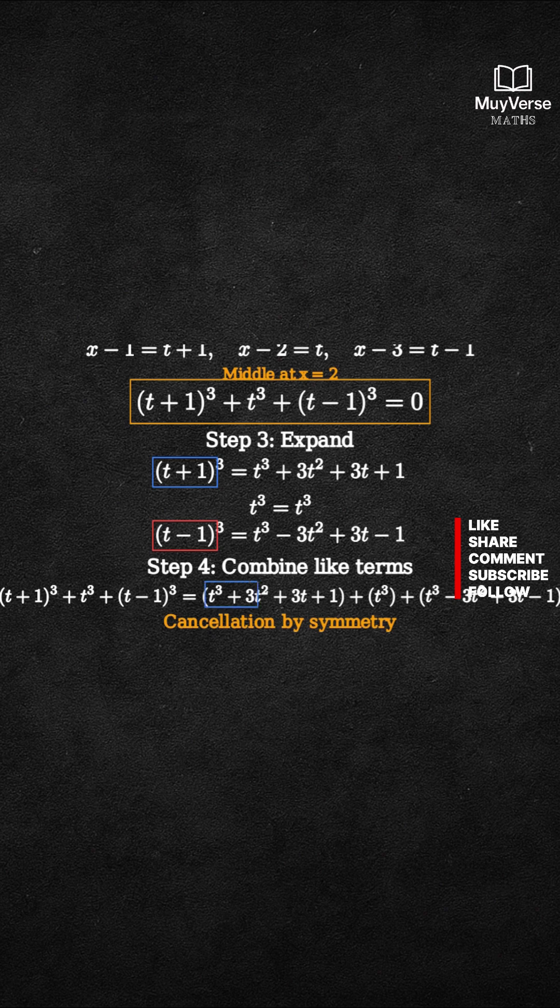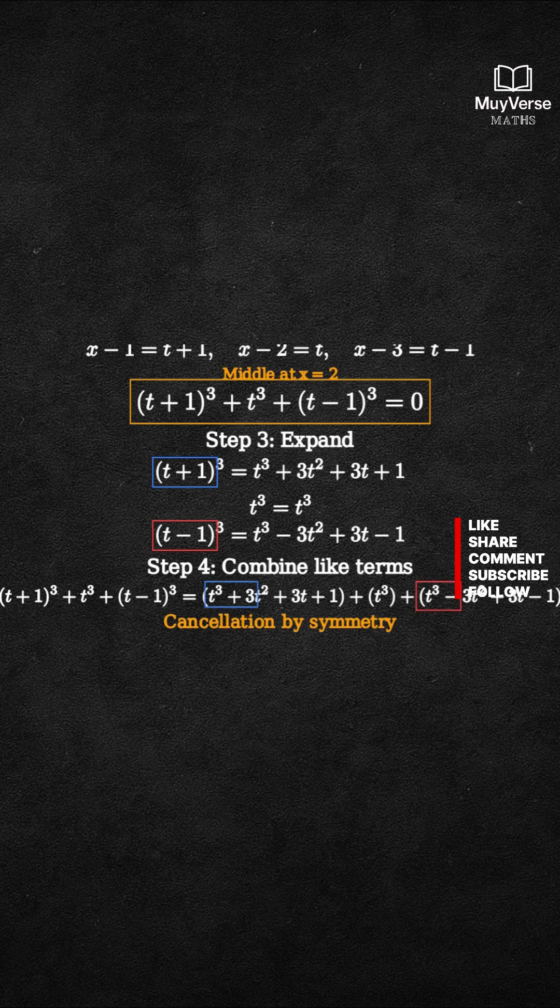The plus 3t squared and the minus 3t squared cancel. The constants 1 and minus 1 cancel. We are left with 3t cubed plus 6t.